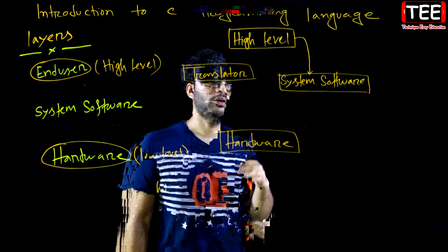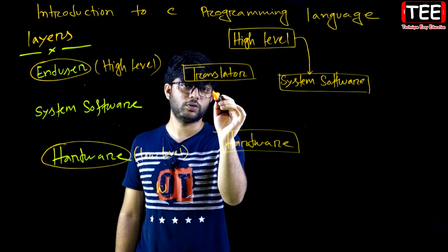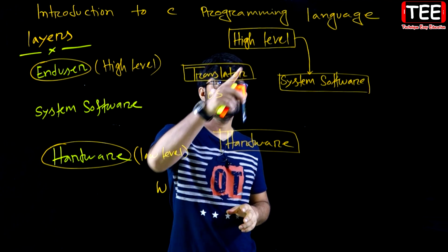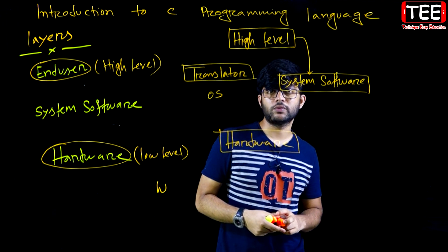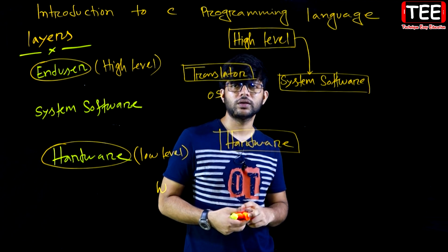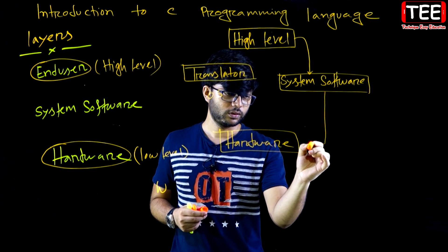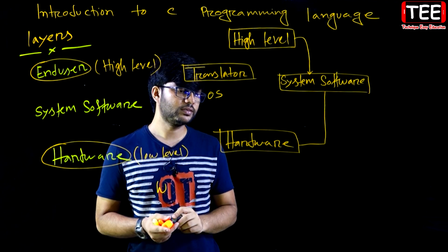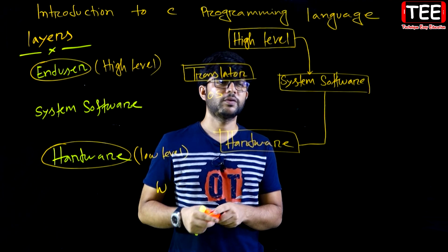The system software acts as a translator program. The system software is a key computer component. The translator program translates. I can connect a high-level instruction through the system software. The system software translates the code, and the hardware gets its part — hardware processes the instruction.